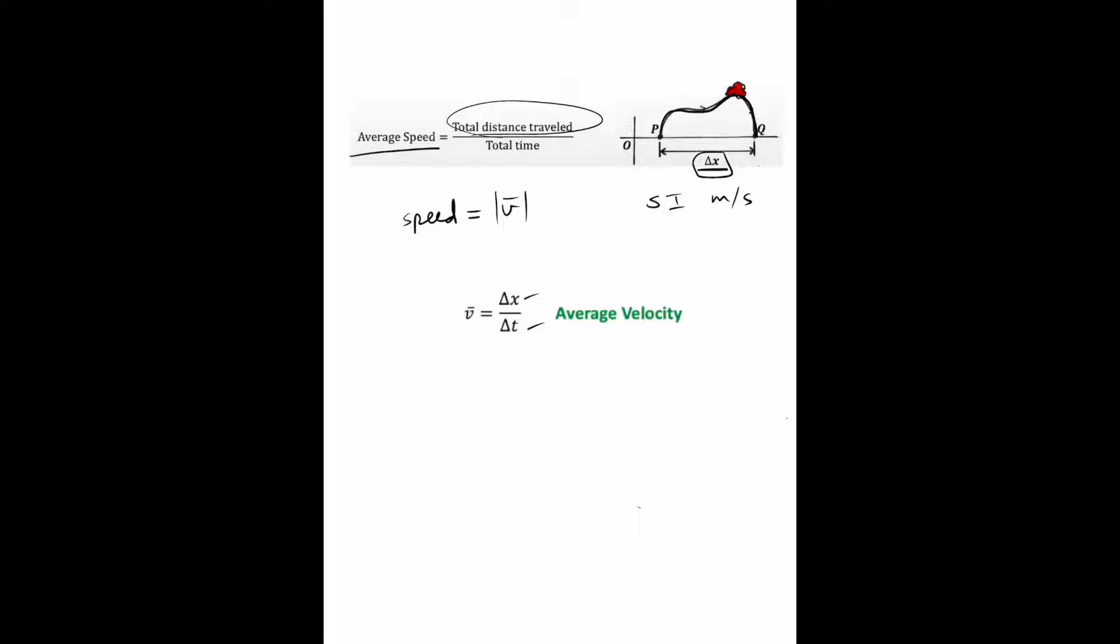The average velocity is positive if the object is moving in the positive x direction, because then the displacement will be positive. And the average velocity is negative if the object is moving in the negative x direction. And speed is just the magnitude of velocity.